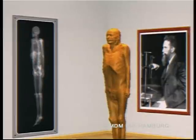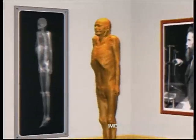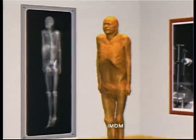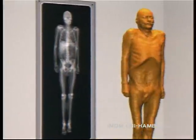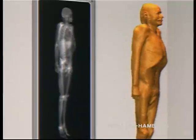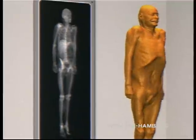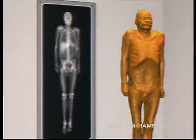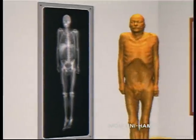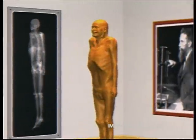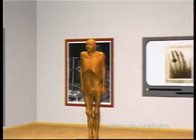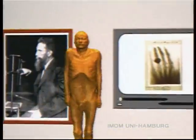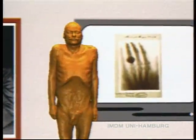Röntgen sent his x-rays through the body, here represented as a 3D reconstruction of a corpse. They created shadow images of interior structures. Several decades after his discovery, x-ray images still looked like the early image of Mrs. Röntgen's hand shown here.